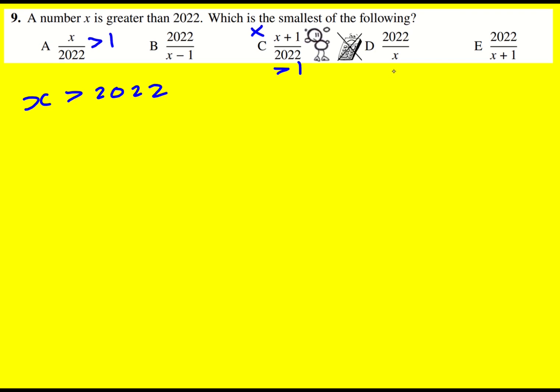We have that this one is going to be less than 1, and this one is also going to be less than 1. But if I divide by something that's bigger than 2022, well basically this one's going to be smaller than this one, so I can rule out D.